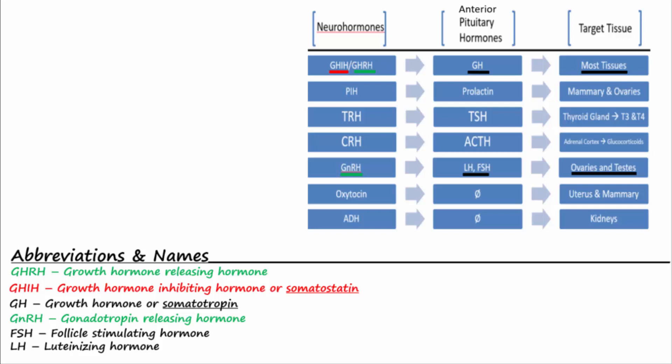Thyroid releasing hormone, or TRH, stimulates the release of thyroid stimulating hormone, or TSH — also known as thyrotropin — from the anterior pituitary. TSH travels to the thyroid gland, where it stimulates the release of the thyroid hormones T3 and T4, which increase metabolism and growth of most body cells.